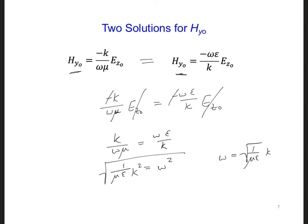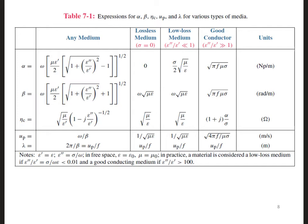Now, if you took ECE 3300, you might remember table 7-1. Here is table 7-1. In the fourth line of this table, you can see that 1 over square root of mu epsilon is just the velocity of the wave.